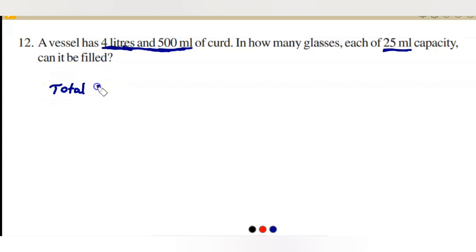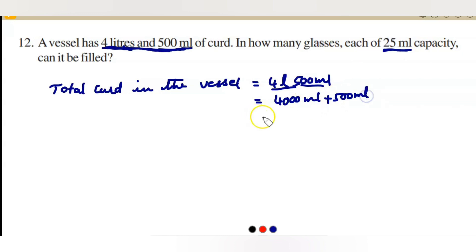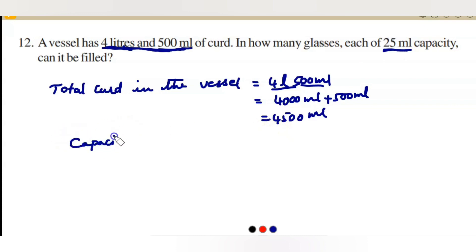Total curd in the vessel is 4 liters 500 ml. Converting to milliliters: since 1 liter is 1000 ml, 4 liters is 4000 ml. So 4000 ml plus 500 ml equals 4500 milliliters. The capacity of each glass is 25 milliliters.